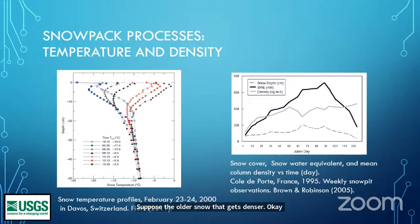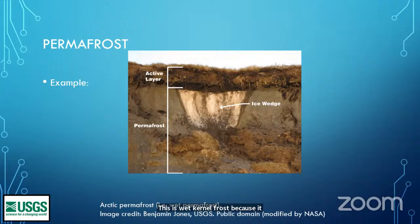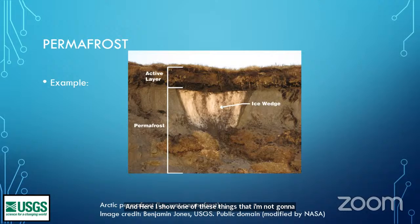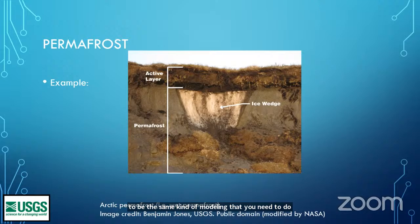Permafrost. We make a distinction between wet permafrost and dry permafrost. This is wet permafrost because it has a lot of water in it. Permafrost is generally defined as ground that's frozen year round, topped by an active layer — the layer that defrosts and refreezes every year. Here I show an ice wedge just to demonstrate that ground is not horizontally uniform — you can come across something like an ice wedge that requires different modeling than the more uniform soil.